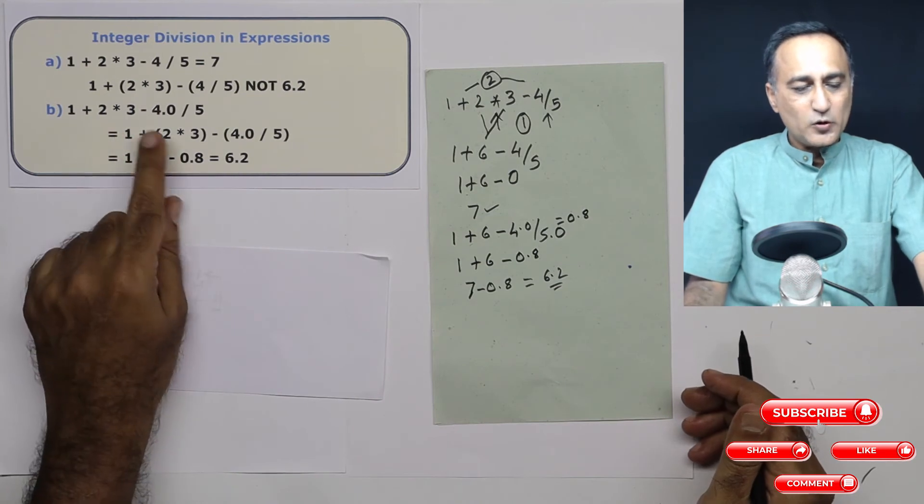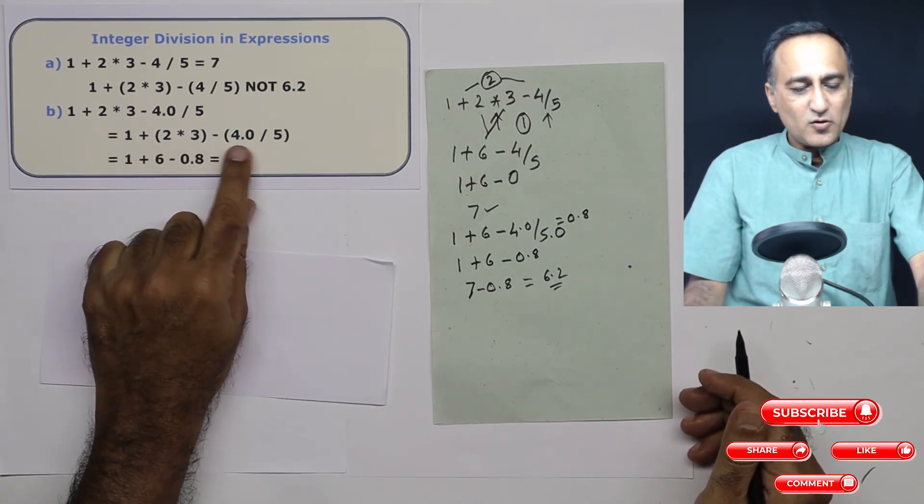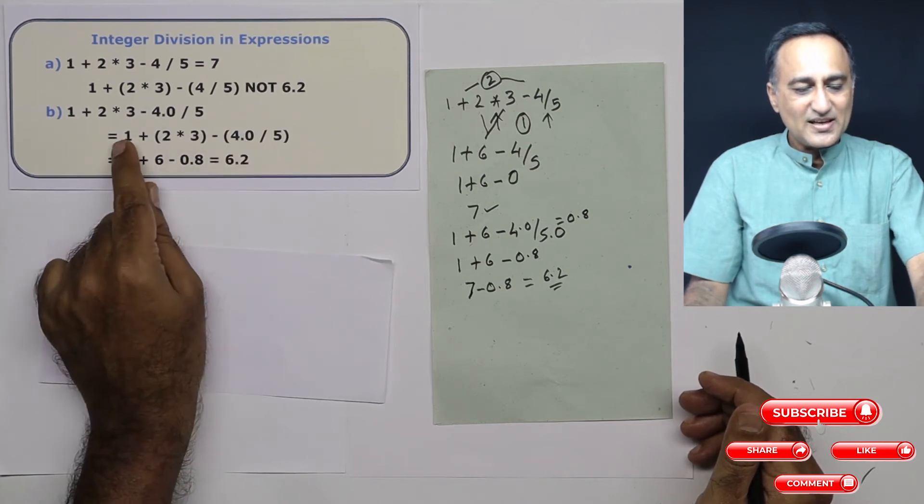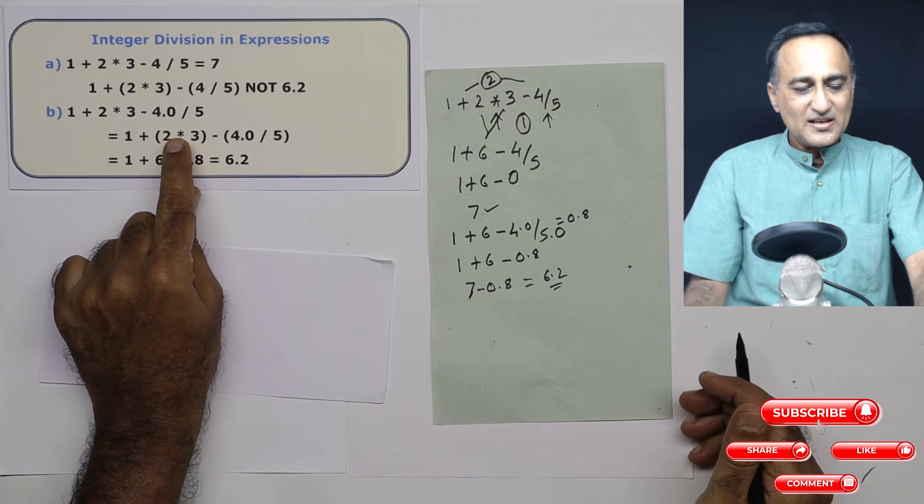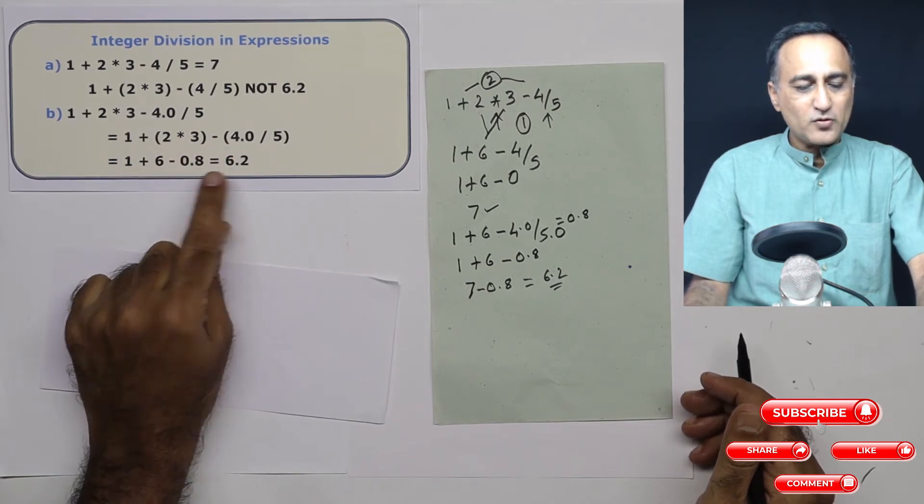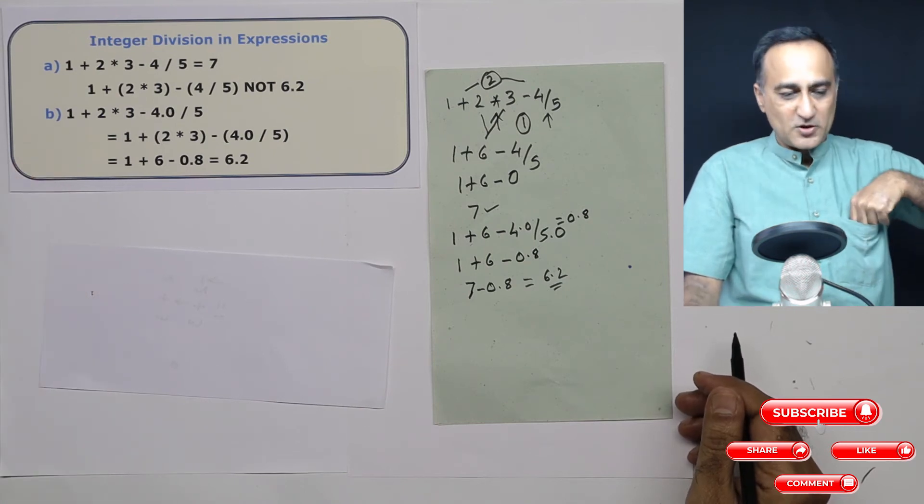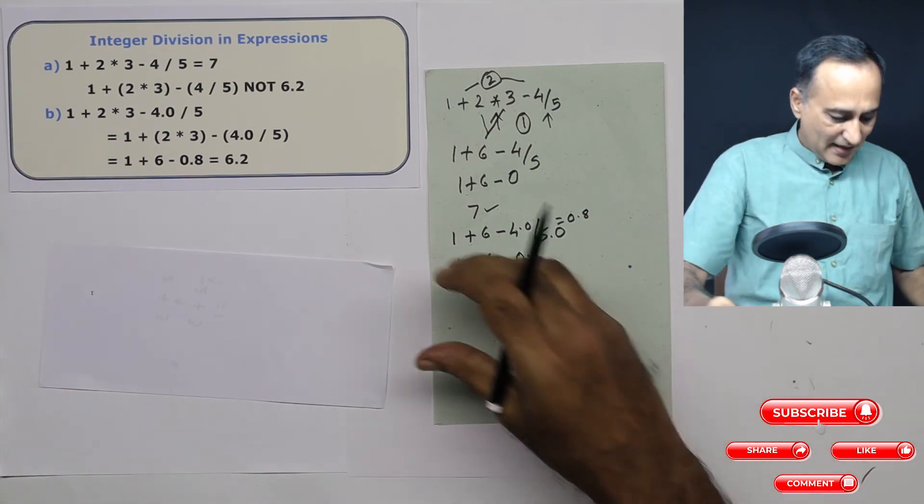So you did see here, 2 into 3 is first, then you can put this into bracket, this gets evaluated first, this gets evaluated next, then this plus the result of this, then minus this is going to give you this 6.2. So I hope this gave you a clear idea of what is integer division in expressions through a couple of simple examples.